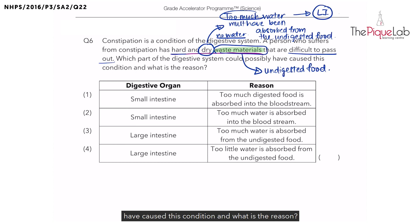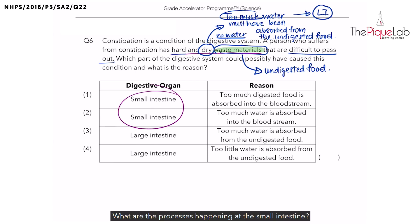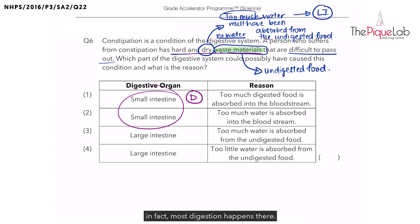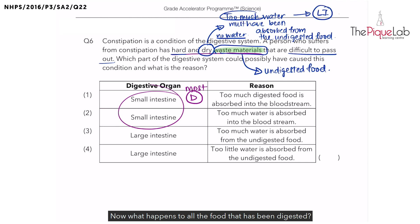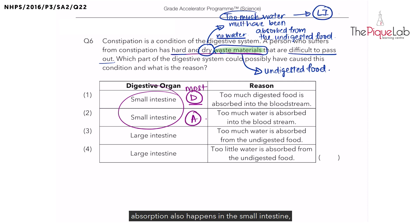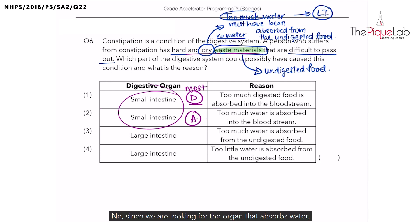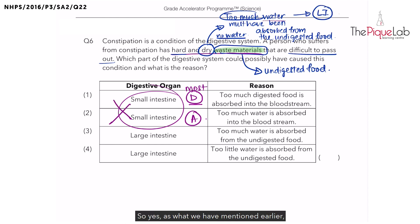Back to the question: which part of the digestive system could possibly have caused this condition? Is it because of the small intestine? Let's recall what processes happen at the small intestine. Digestion happens there — in fact, most digestion is completed at the small intestine. All digested food is then absorbed through the walls of the small intestine into the bloodstream. But water is not absorbed there, so the small intestine is not our answer.